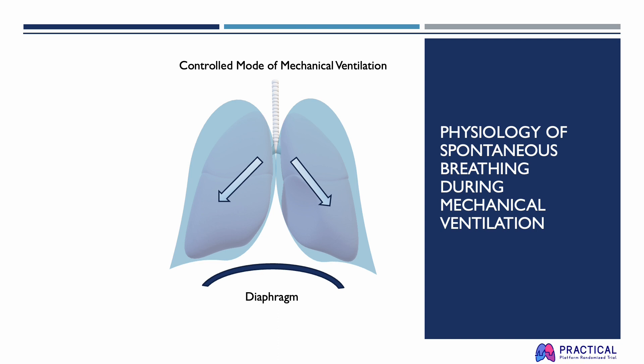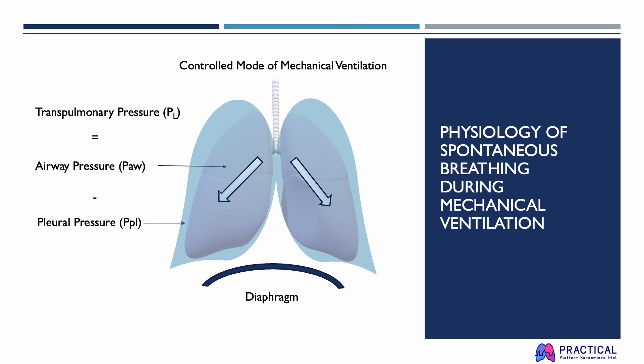The total stress exerted on the lungs can be calculated by looking at the difference between the positive airway pressure and pleural pressure, which is the transpulmonary pressure. This reflects lung inflation both by the ventilator and the diaphragm's contraction.